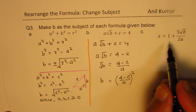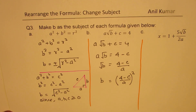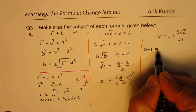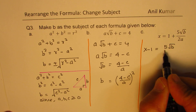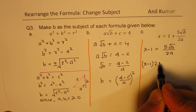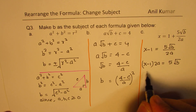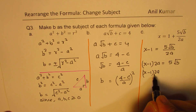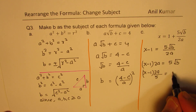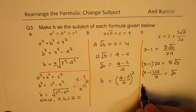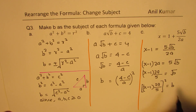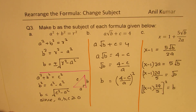For part C, X equals to 1 plus 5 times square root B over 2A. First, take away 1: X minus 1 equals to 5 times square root B divided by 2A. Multiply by 2A to get (X minus 1) times 2A equals to 5 times square root B. Divide by 5 — or equivalently multiply by 2A over 5. Now square both sides: ((X minus 1) times 2A over 5) squared equals to B.